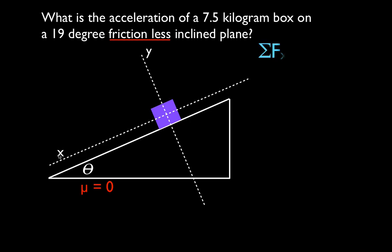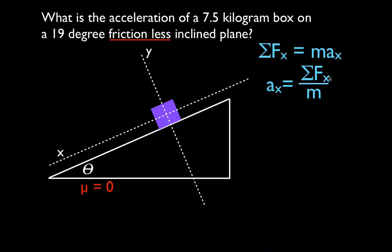We're going to use Newton's second law: F equals ma — the sum of the forces equals the mass times the acceleration. The object is going to accelerate in the x direction, so we sum up the forces in the x direction, set them equal to mass times acceleration in x. Therefore, the acceleration in the x direction equals the sum of the forces in the x direction divided by the mass. We know the mass is 7.5 kilograms, so we need to find the forces.